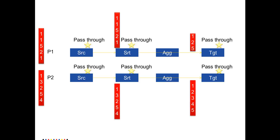Without the partition, the expected outcome would be 1, 2, 3, 4, 5. However, with two partitions, the first target gets 1, 2, 5 and the second target gets 1, 2, 3, 4, 5. Records belonging to the same group have gone into different partitions, so data integrity has been lost. We may get better performance, but the data integrity is compromised.